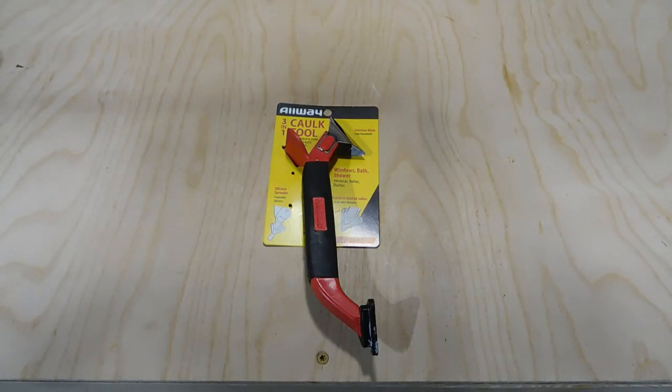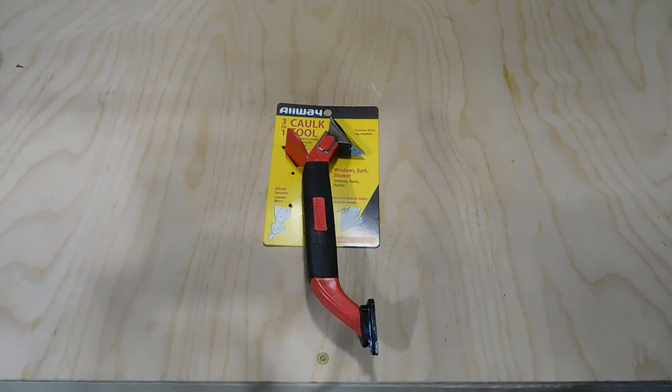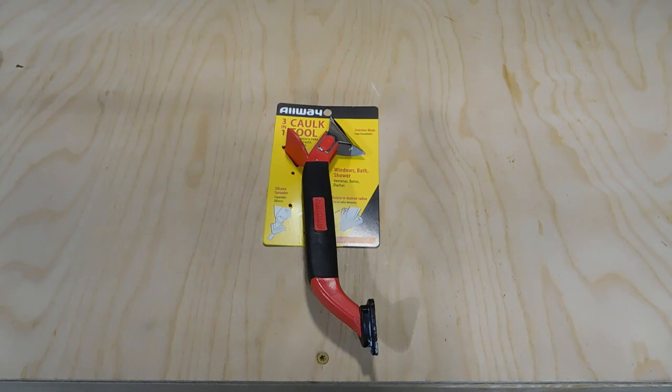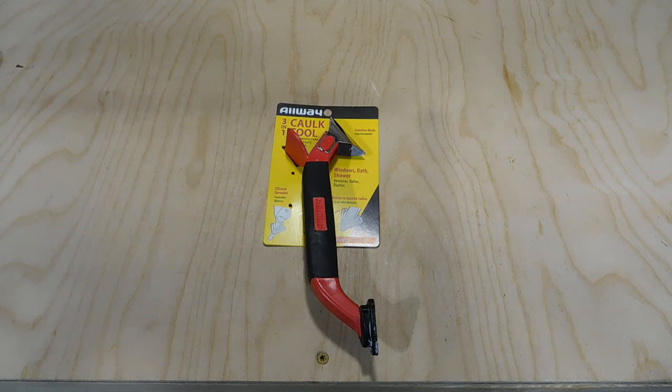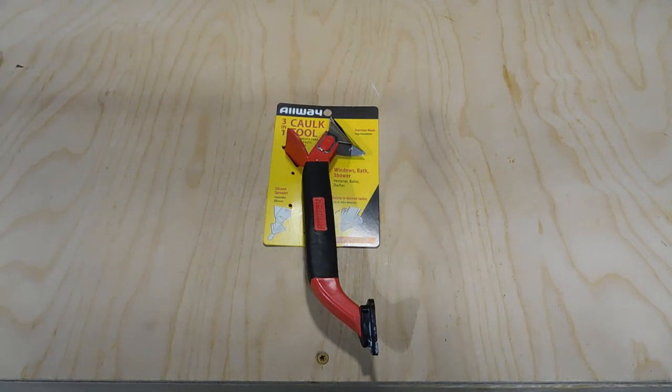All right guys, so the Allway Tools three-in-one caulk tool with stainless steel caulk remover. We've got a caulk tool from a company named Allway Tools. I haven't seen this brand too much at Home Depot, so I'm not overly familiar with it. I picked this up in the paint section because I had a couple paint jobs I had to knock out and I had to get some caulk to work on a ceiling and seal up some of the little cracks that had developed over time.